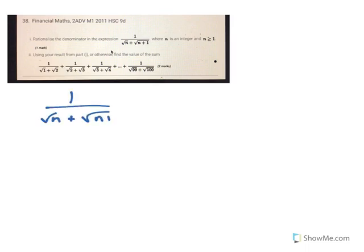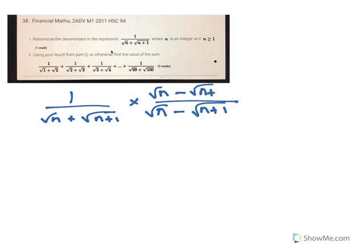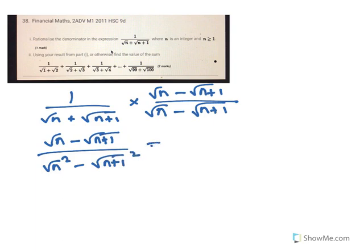Okay, so with this first one, you need to rationalize this here. So to rationalize this, you multiply it by root n minus root n plus 1. So it's root n minus root n plus 1. On the top, you get root n minus root n plus 1. On the bottom, this is the difference of two squares, so it's root n squared minus root n plus 1 squared.